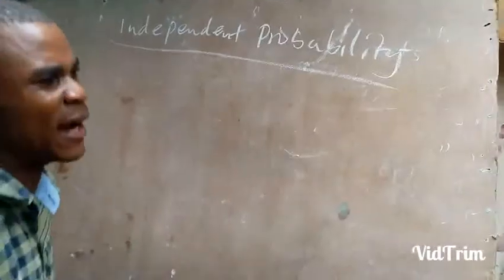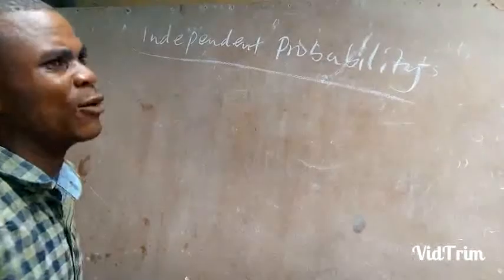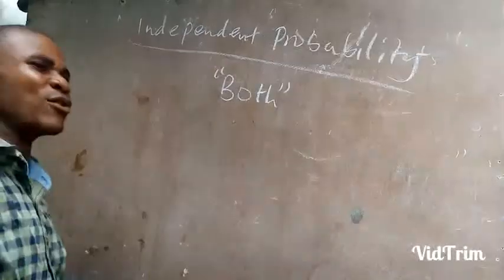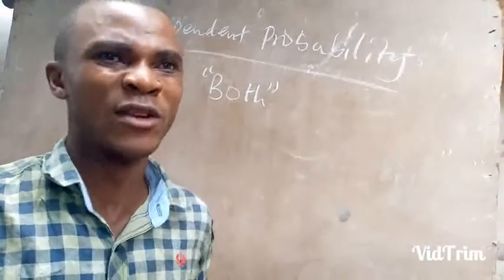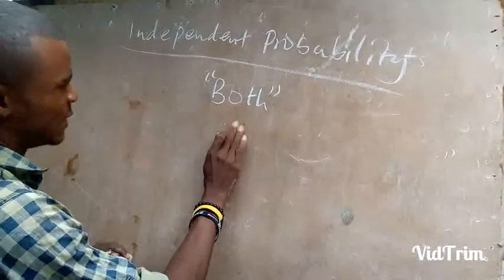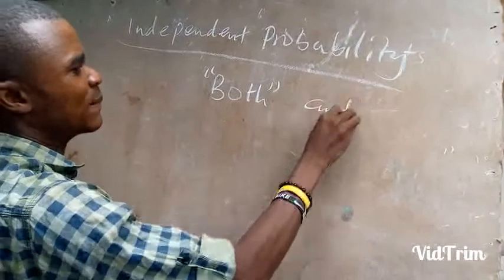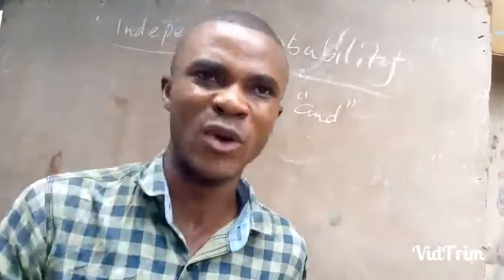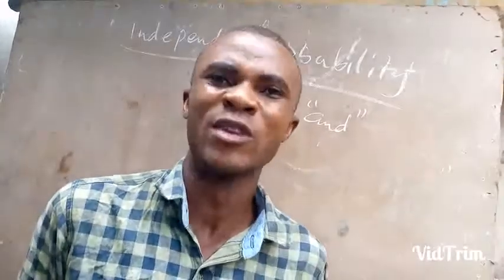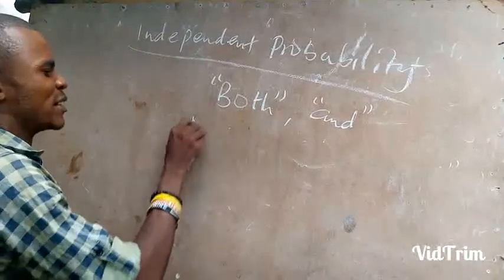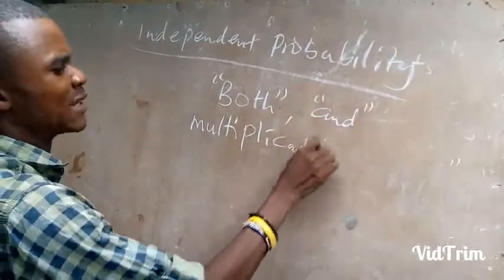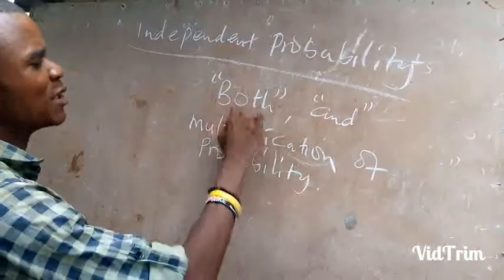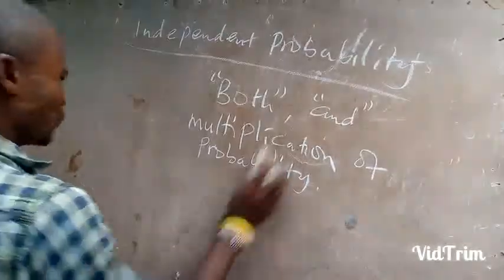The words on the question paper that tell you two events are independent probability — that they will occur without one interfering with the other — are: when you see 'both' on the question paper. The moment you see 'both,' it tells you the two events will go on simultaneously. You can also see 'and' on the question paper; when you see 'and,' it tells you the two events will go on without one interfering with the other. For independent probability, you always multiply the probabilities.